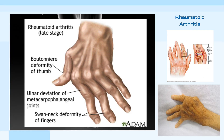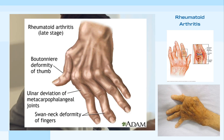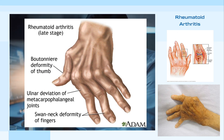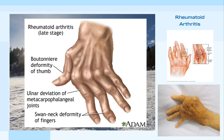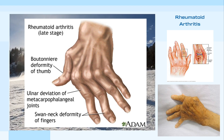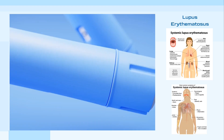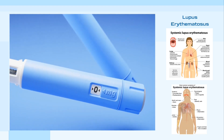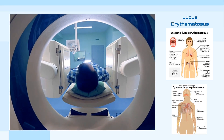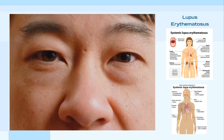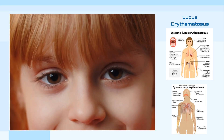Rheumatoid arthritis, an autoimmune disease where the immune system attacks the body's joints, causes joint inflammation, stiffness, and pain, leading to joint degeneration and deformation. The disease affects multiple joints simultaneously, particularly the knees, wrists, and hands. Lupus erythematosus, a chronic autoimmune disease, causes inflammation in all parts of the body as the immune system attacks various body tissues. It can result in tissue damage and is considered a life-threatening disease, with severity varying among individuals.